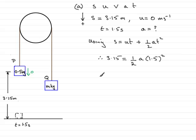And if I rearrange this to make a the subject by multiplying both sides by 2, that will give me 2 multiplied by 3.15. That would leave me with 1.5 squared multiplied by a and dividing by 1.5 squared on both sides, leaves me with a equaling 2 lots of 3.15 divided by 1.5 squared.